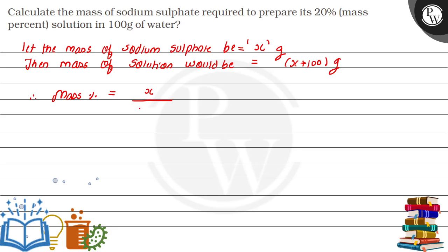So we are given that mass percentage equals 20, which means 20 = (X/(X+100)) × 100.